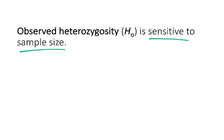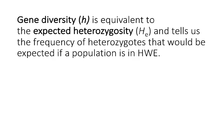Because observed heterozygosity is calculated by identifying heterozygous individuals out of the total number of individuals, it's really sensitive to sample size — the number of heterozygous individuals you identify is going to be partially dependent on how well you sample that population. A better alternative that is less sensitive to sample size is the metric of gene diversity, often abbreviated as lowercase h. If you see the term expected heterozygosity, or H sub E, it's the same thing as gene diversity.